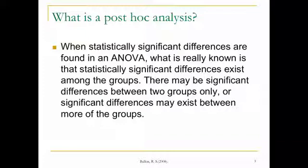So we ran our test in ANOVA, we had four groups, and we had a statistically significant effect. And so we know that significant differences exist, but where those differences are we're not sure. There may be a significant difference between two groups only, or significant differences may exist between more of the groups. So we need to find that out.